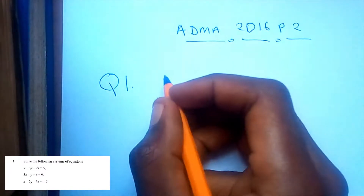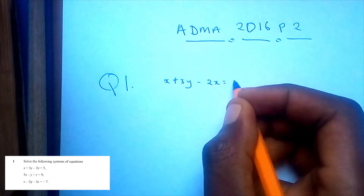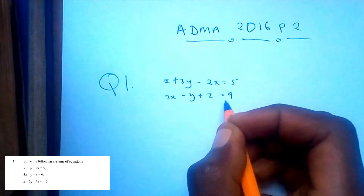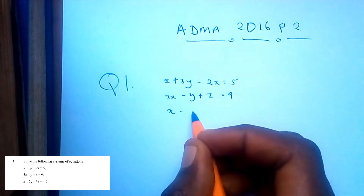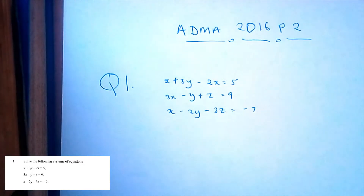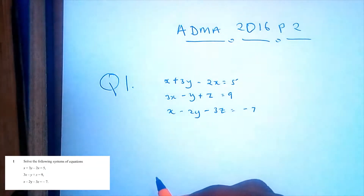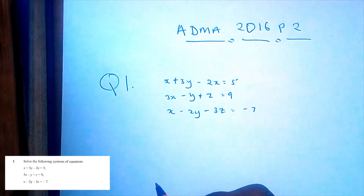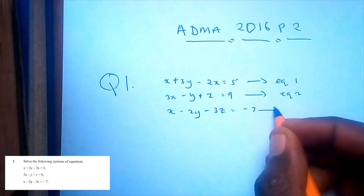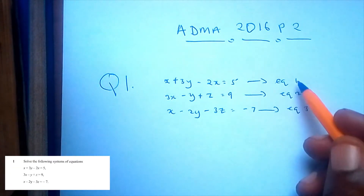The system is: x + 3y - 2z = 5 (equation 1), 3x - y + z = 9 (equation 2), and x - 2y - 3z = -7 (equation 3). To solve this, I'm going to first solve equations 1 and 2 simultaneously.